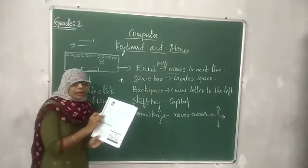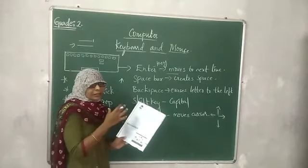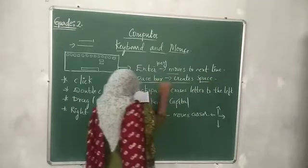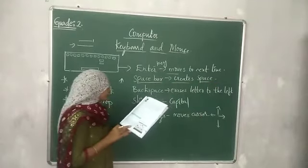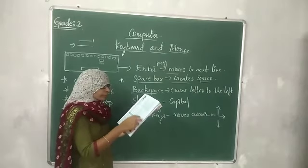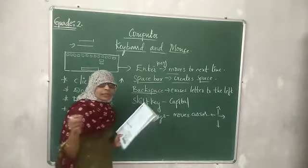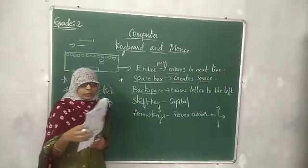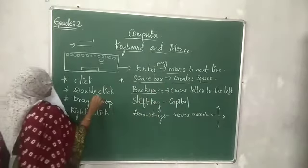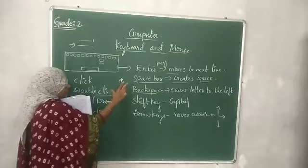Space Bar: while writing in a notebook you give a finger space between words. Similarly, on this keyboard you have a space bar which creates space between words. Backspace: this helps to erase the letter to the left of the cursor. If you use the backspace key, just like an eraser, you can erase letters. If you click on backspace, you can simply erase in this way.